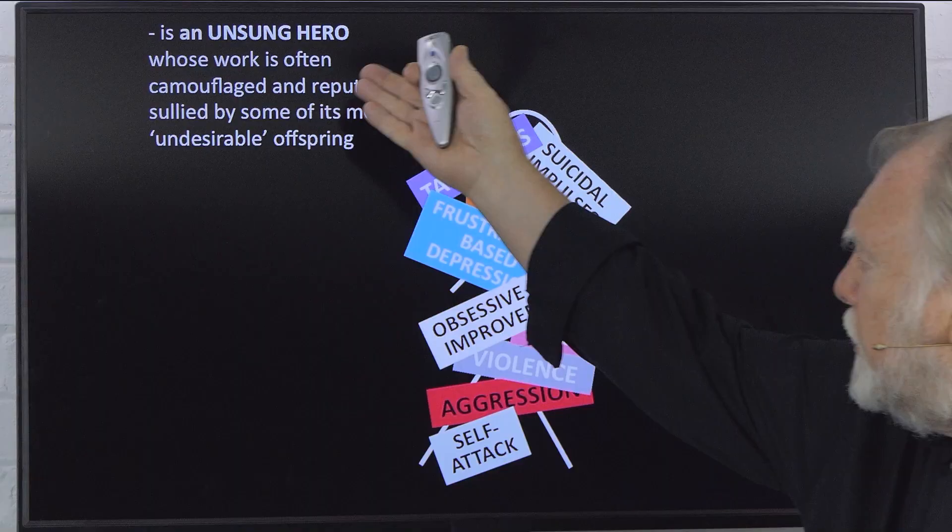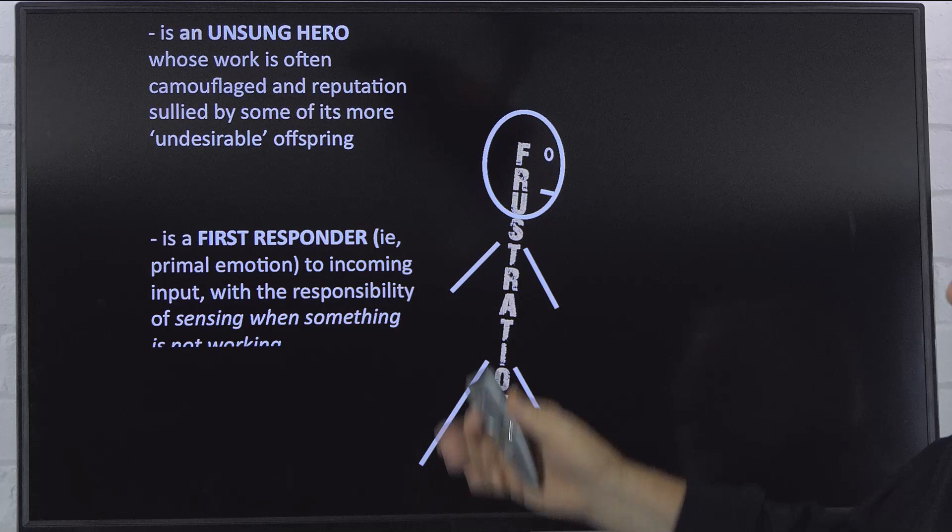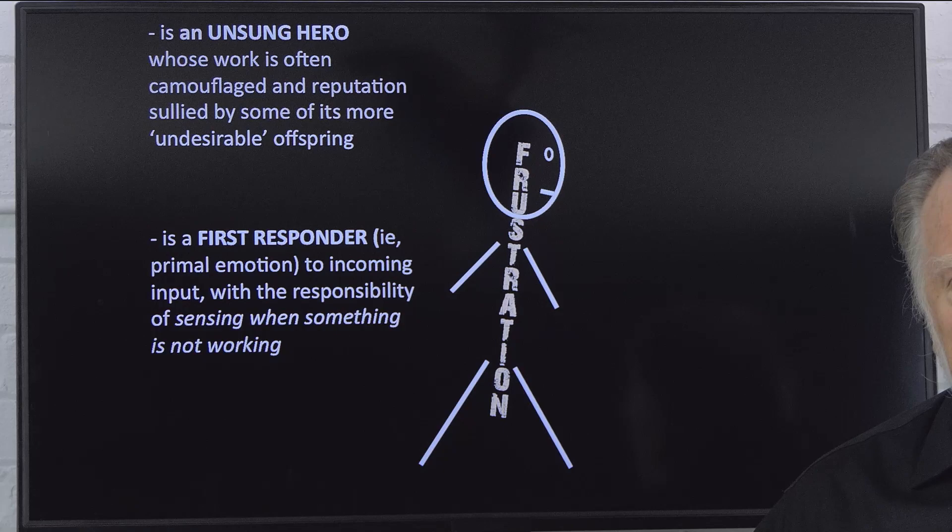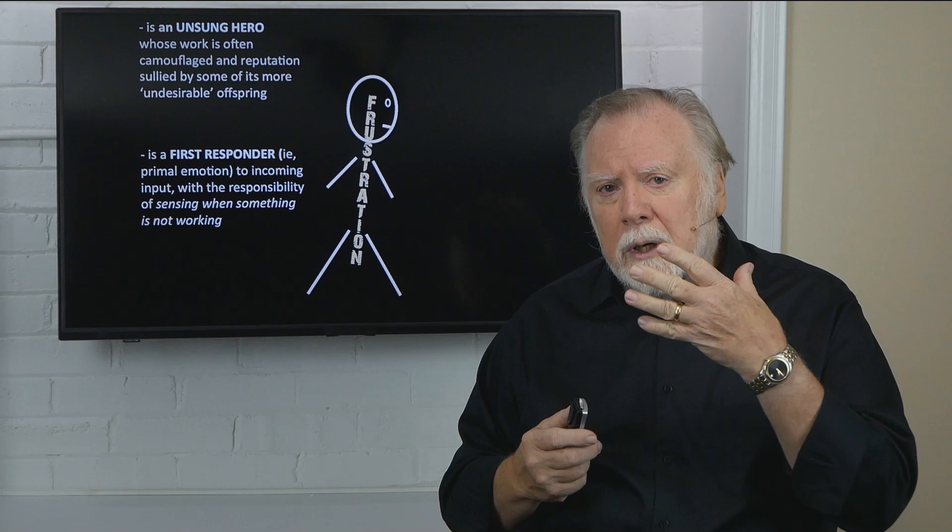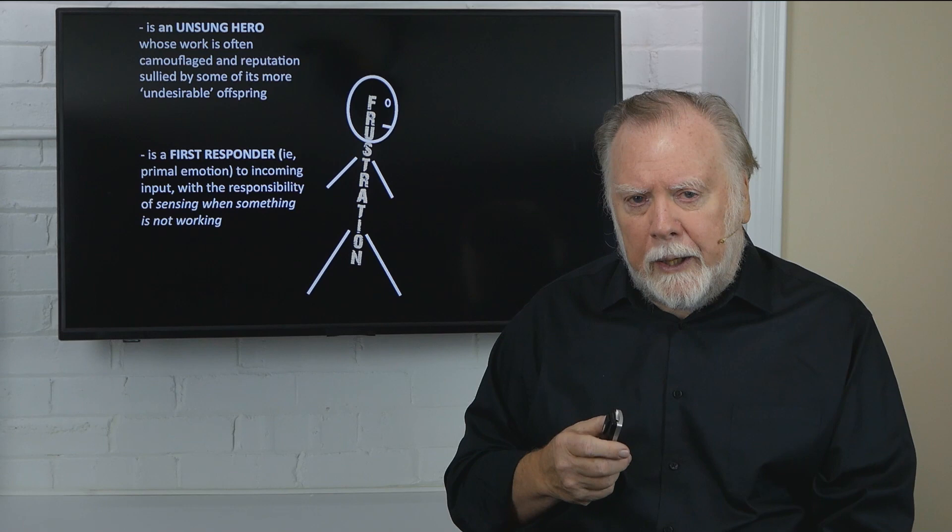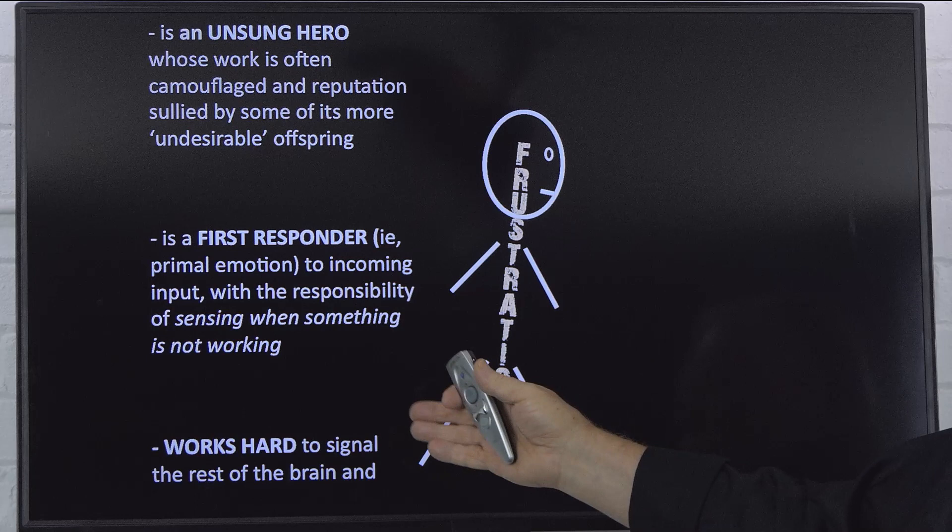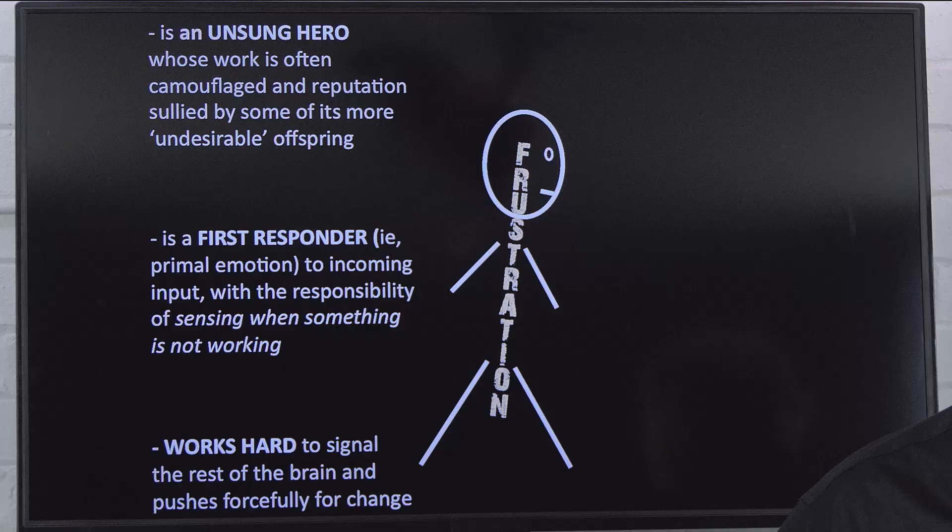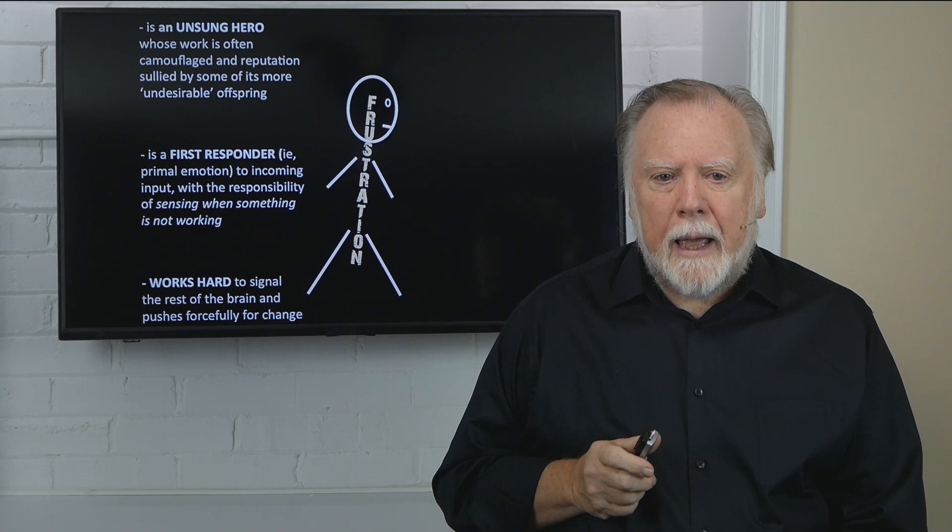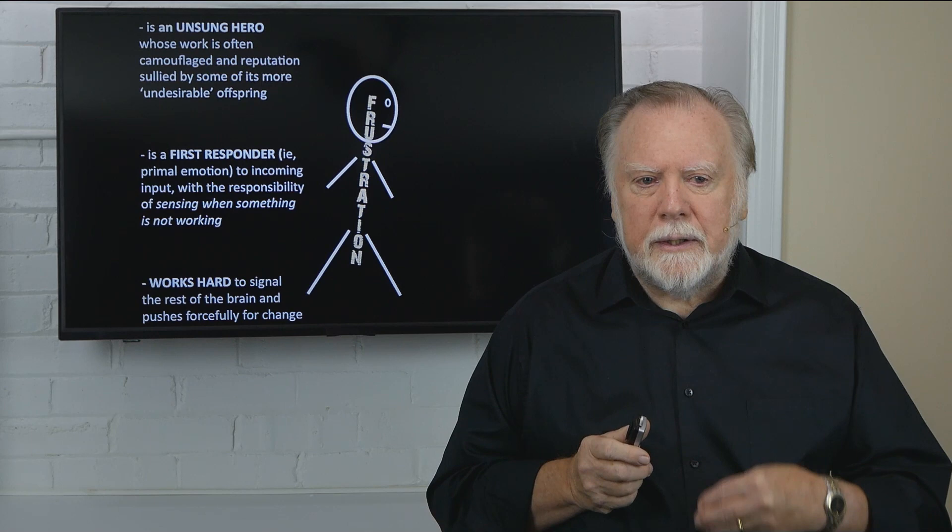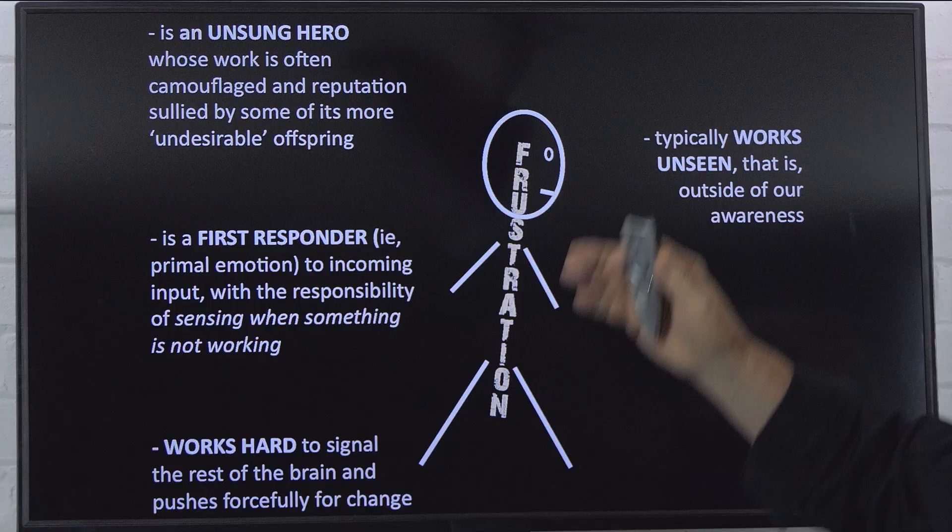So, I've alluded to the fact that frustration has work to do. Indeed, it does. In fact, it is a first responder, also called a primal emotion, to incoming input. It sits just inside the sensory gate to the brain to scan for any indication that something is not working. In fact, that's the best working definition of frustration. It works hard to signal the rest of the brain and pushes forcefully for change. Emotion means e-motion, to move, and frustration certainly does that.